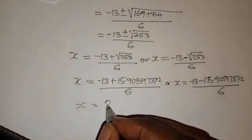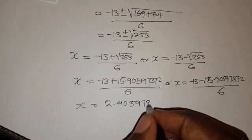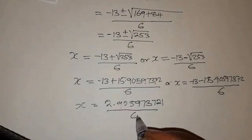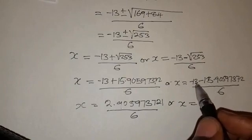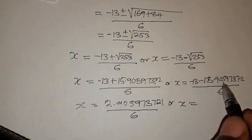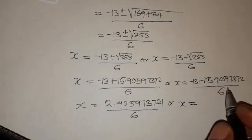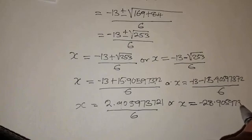Or x equals negative 13 minus 15.9059, which is the same as adding. You are going in the negative. So you are going to have negative 28.905973721, then everything over 6.